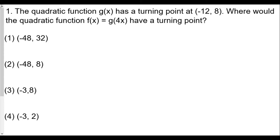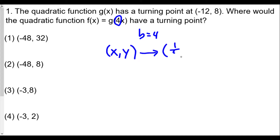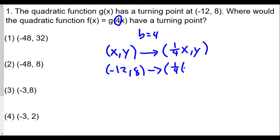For question number one, our b value is 4, so b equals 4. That means we multiply the x value by one over four, so x comma y transforms to one-fourth x comma y. Starting from negative 12 comma 8 for g of x, the new coordinate is one-fourth times negative 12 comma 8, which is negative 3 comma 8. That is choice 3.